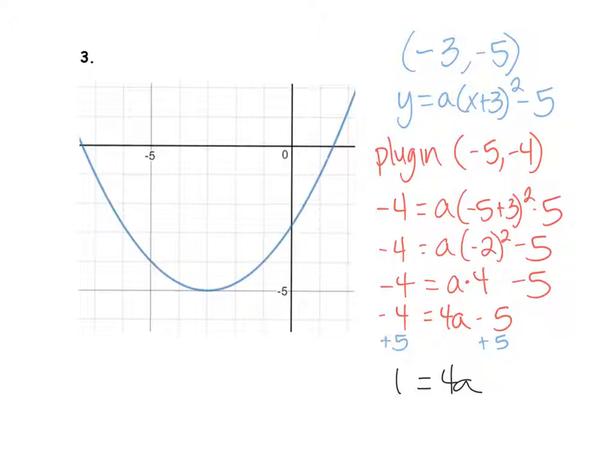Divide by four. A equals one fourth. Y equals one fourth X plus three squared minus five. And it's so fat because it's a fraction—fat fraction.